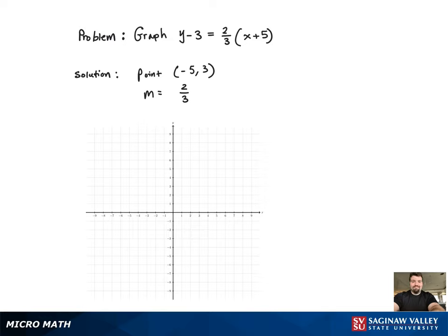So we're going to put the point on there, negative 5, 3. Now since the slope is 2 thirds, that means it's rise over run, so we'll rise 2, run 3, get to the next point. And now we're good to connect the dots. There's our line, and the graph's complete.